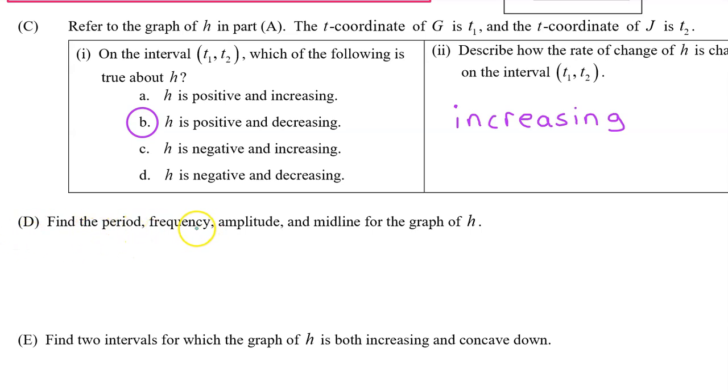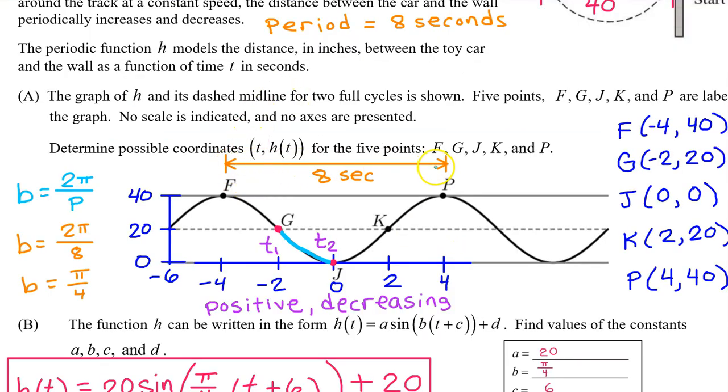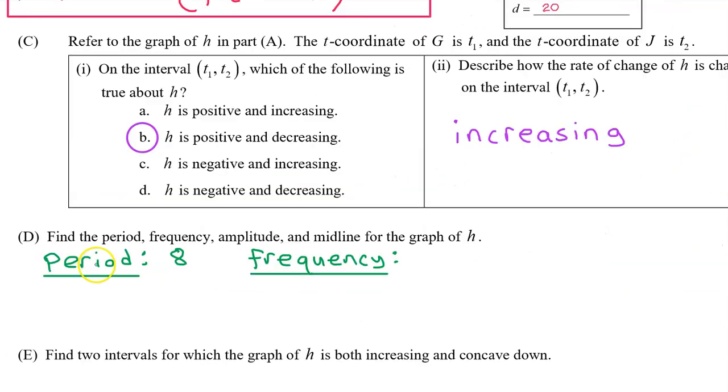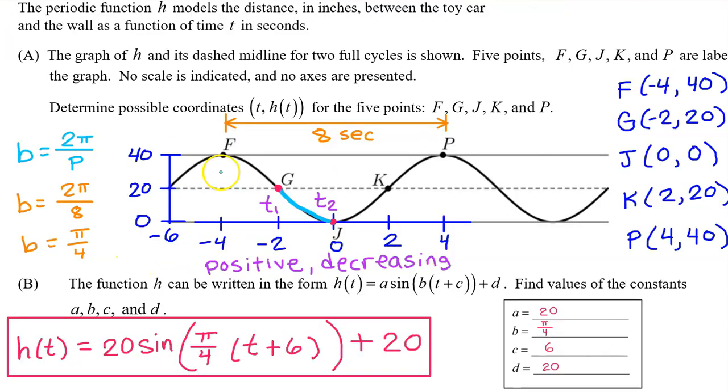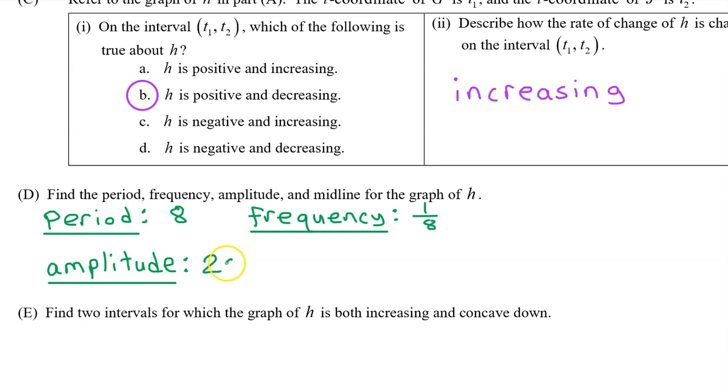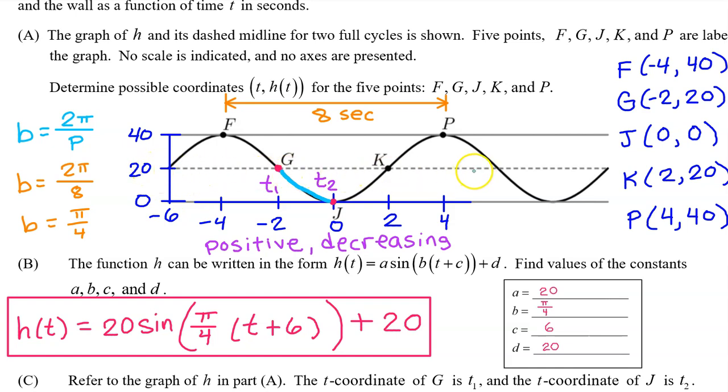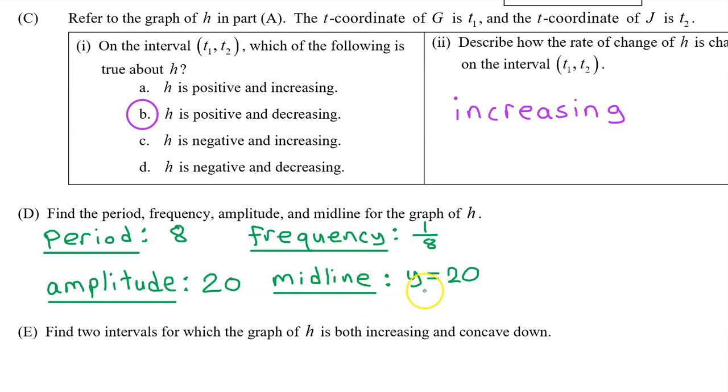Part d. Find the period, frequency, amplitude, and midline for the graph of h. The period was the length of one cycle. That was 8 seconds. The frequency is the reciprocal of the period. So, 1 over 8. The amplitude is the distance between the midline and the highest value. This distance is 20. So, the amplitude is 20. What about the midline? The midline is the horizontal line halfway between the highest value and the lowest value. The equation of a horizontal line is always y equals something. So, don't just put 20. For the midline, you should put the equation y equals 20.